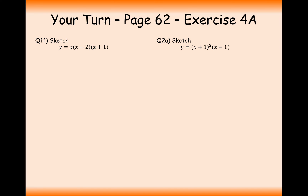Okay, it's your turn. Have a go at these couple of questions — pause the video and try your best. For the first one, when y equals 0 to find our roots, we get 0 equals x times (x minus 2)(x plus 1), so the x-values are 0, 2, and minus 1. When x equals 0 for the y-axis intersection, we get y equals 0 because the leading x-term makes the whole expression 0.